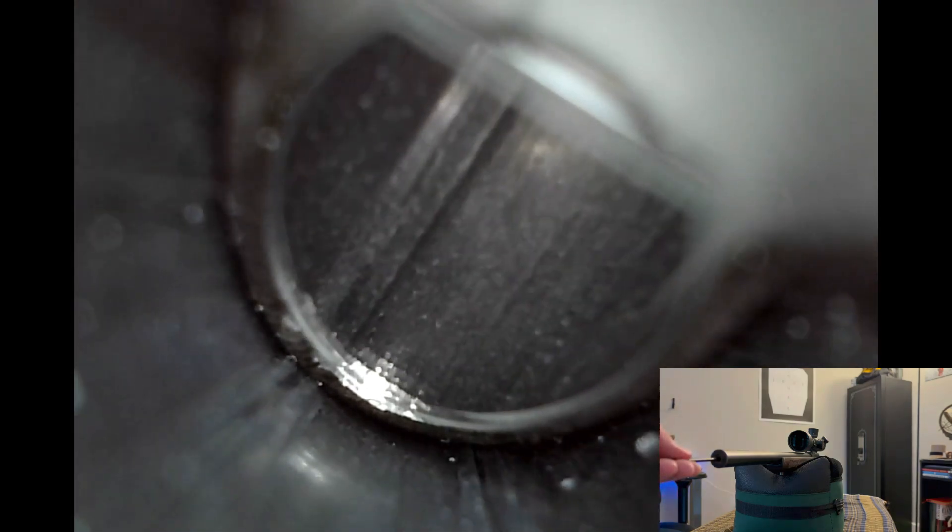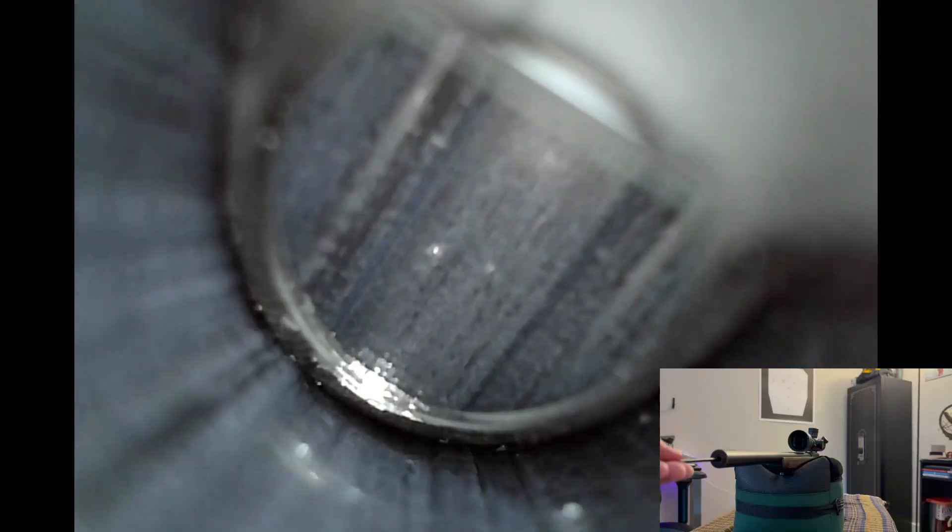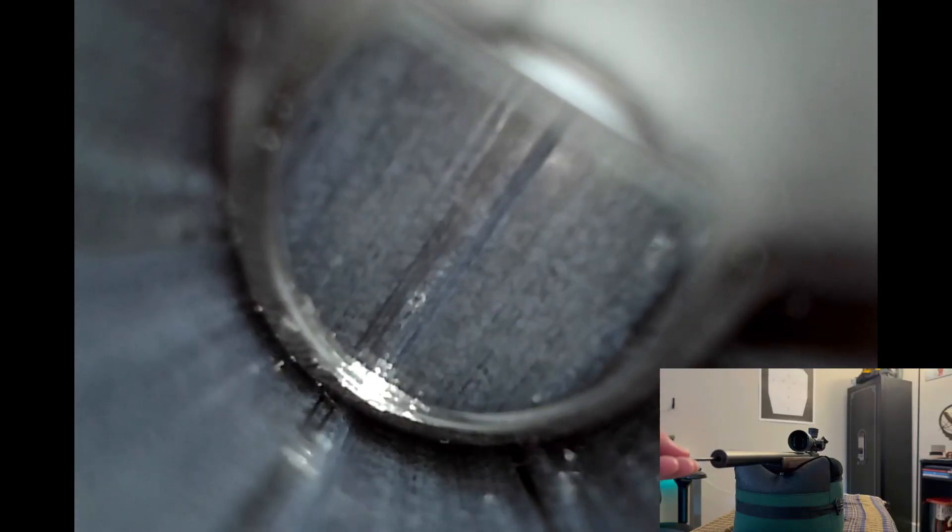Cold hammer forged barrels like the CZ-457 Varmint's are made by shaping steel around a mandrel with a series of hammers which creates a denser and more durable heat resistant barrel, while a chrome lined barrel that we saw on the AR-15 are made with a thin layer of chrome electroplated to the inside of the bore to increase the hardness and extend the lifespan of the barrel. The two barrels we saw today use both techniques for two similar outcomes, so I thought it'd be interesting to visually see the difference.